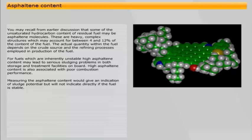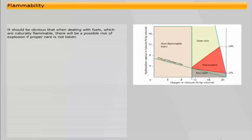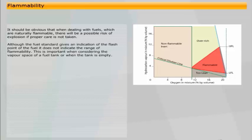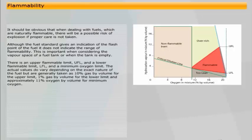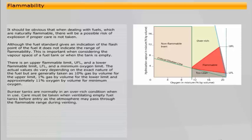It should be obvious that when dealing with fuels which are naturally flammable, there will be a possible risk of explosion if proper care is not taken. Although the fuel standard gives an indication of the flash point of the fuel, it does not indicate the range of flammability. This is important when considering the vapour space of a fuel tank or when the tank is empty. There is an upper flammable limit, UFL, and a lower flammable limit, LFL, and a minimum oxygen limit. The actual values do vary depending on the exact nature of the fuel, but are generally taken as 10% gas by volume for the upper limit, 1% gas by volume for the lower limit, and approximately 11% oxygen by volume for minimum oxygen. Bunker tanks are normally in an over-rich condition when in use. Care must be taken when ventilating empty fuel tanks before entry as the atmosphere may pass through the flammable range during venting.